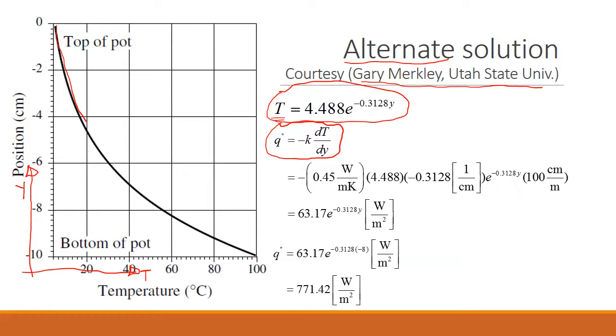q double prime equal to minus k dT dy. So we just take the derivative of this expression, of this expression of course. So we get minus k, and this is the constant.